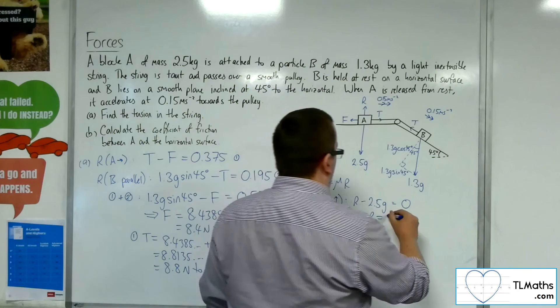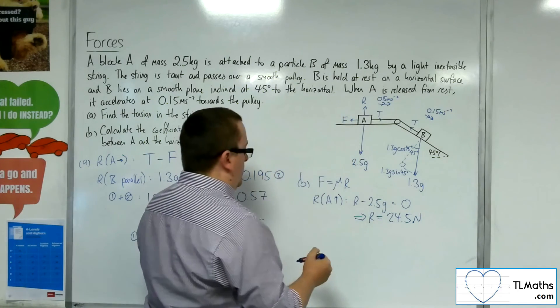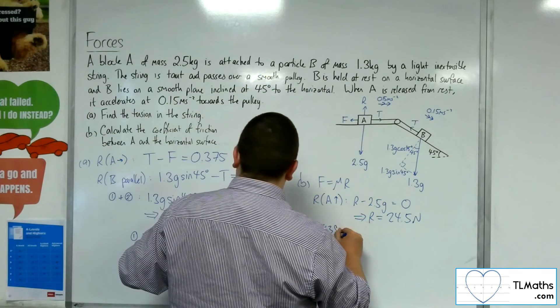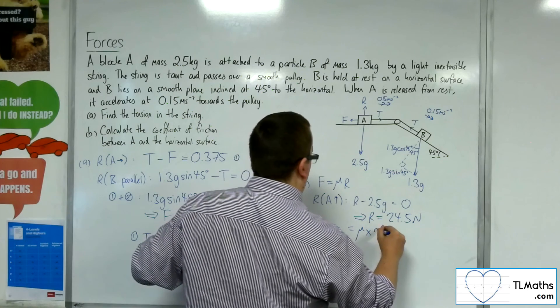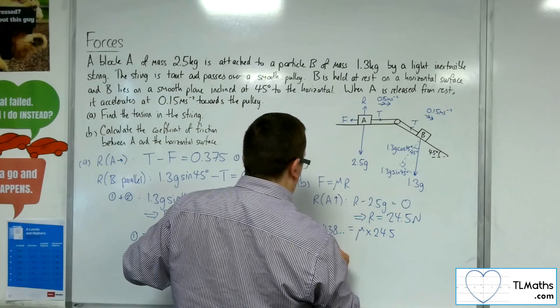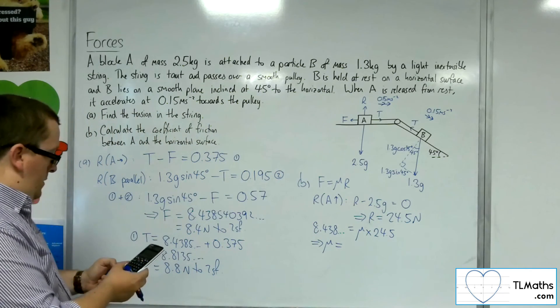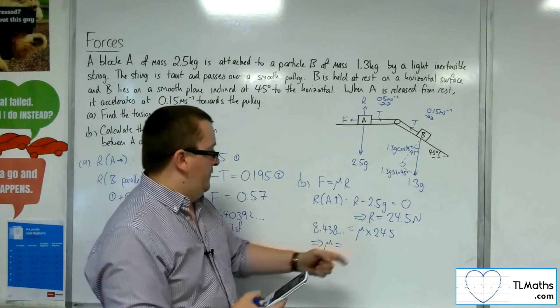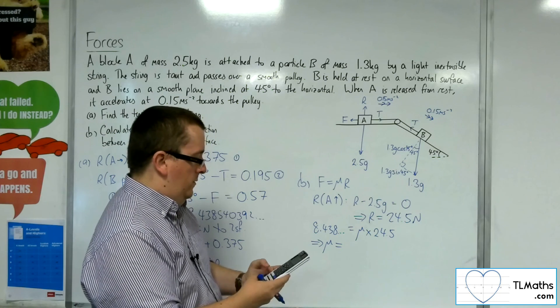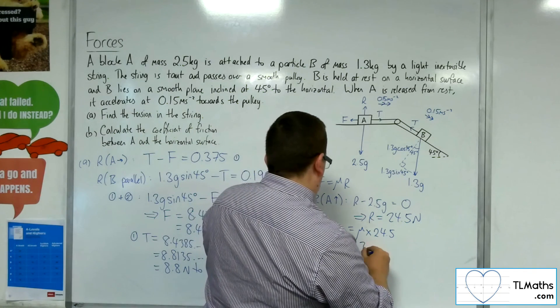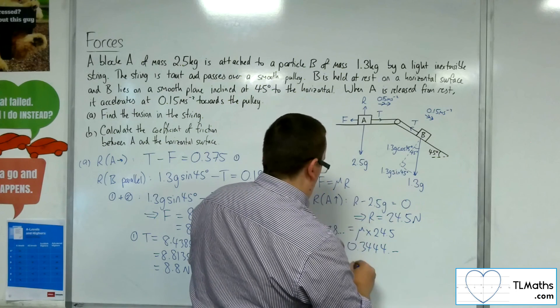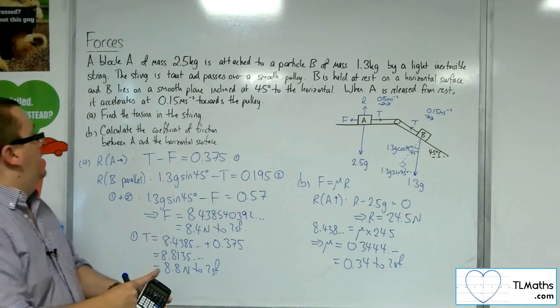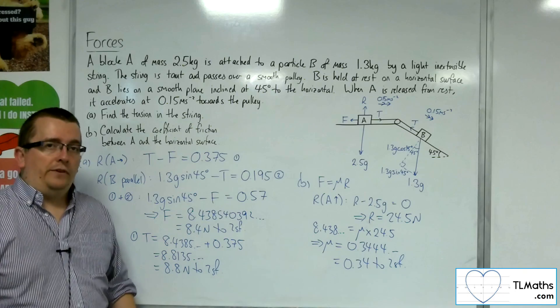So that's 24.5 newtons. So the frictional force, the 8.438, is equal to mu times the 24.5. So 8.438540392, divide that by 24.5, and we get 0.3444, so 0.34 to two significant figures. That is the coefficient of friction between A and the horizontal surface.